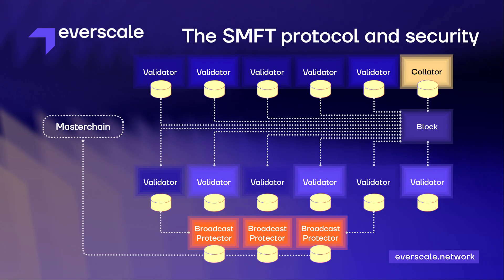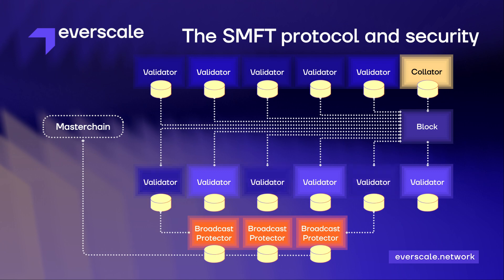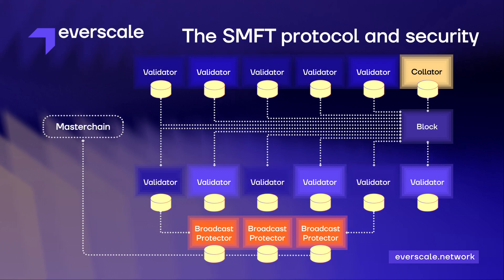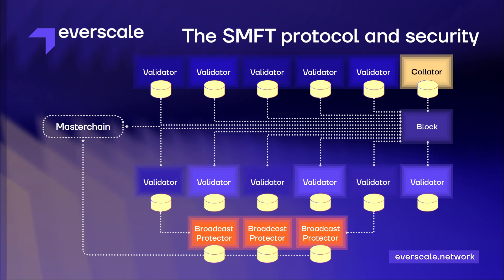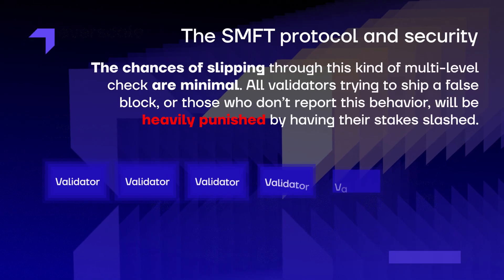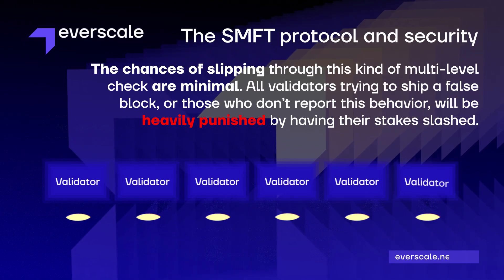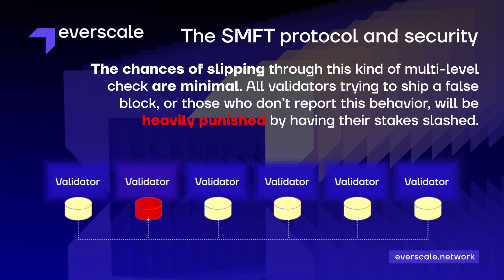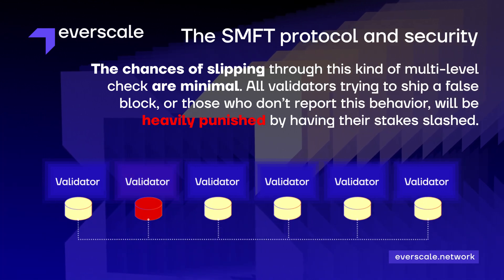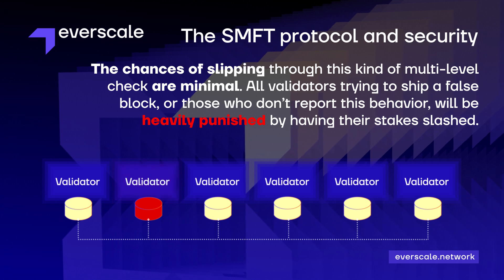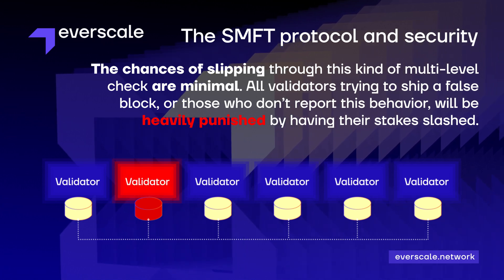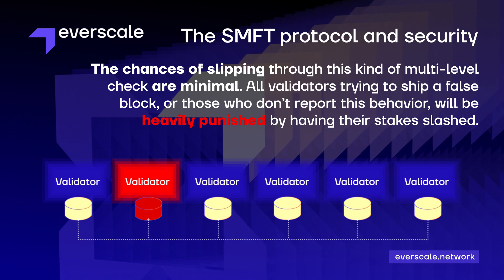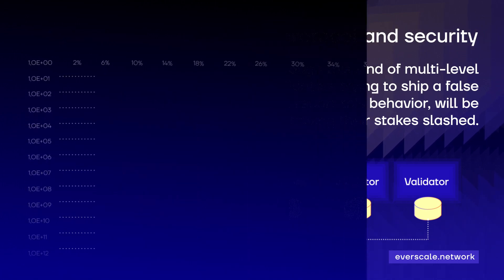The validators then randomly choose a number of verifiers, which have to verify that the block is correct, and then also submit the proof up to the master chain. The chance of slipping through this kind of multi-level check is minimal. All validators trying to ship a false block, or those who don't report this behaviour, will be heavily punished by having their stake slashed.